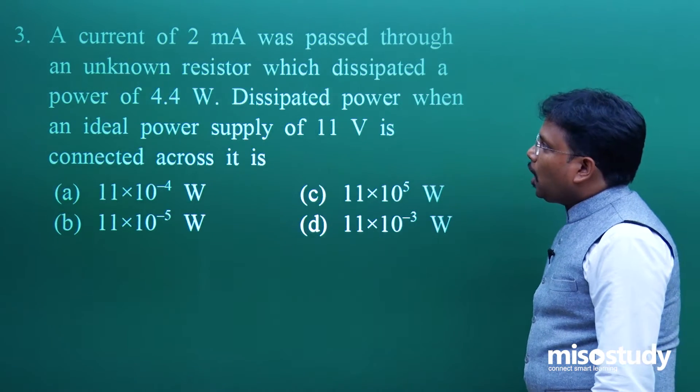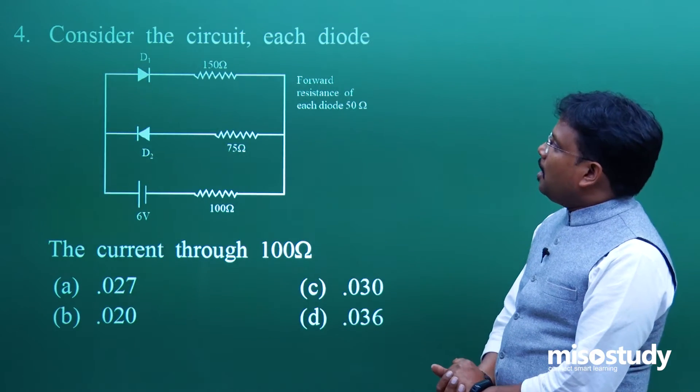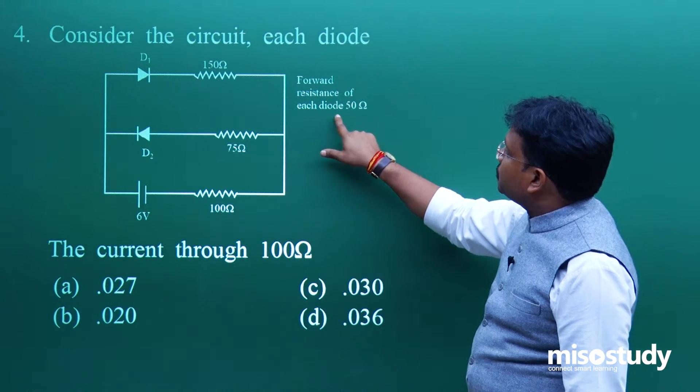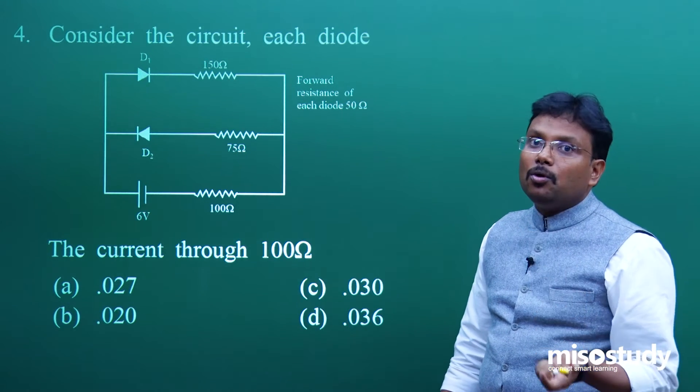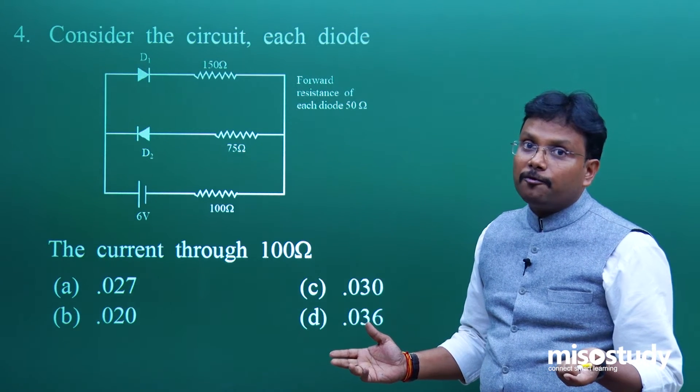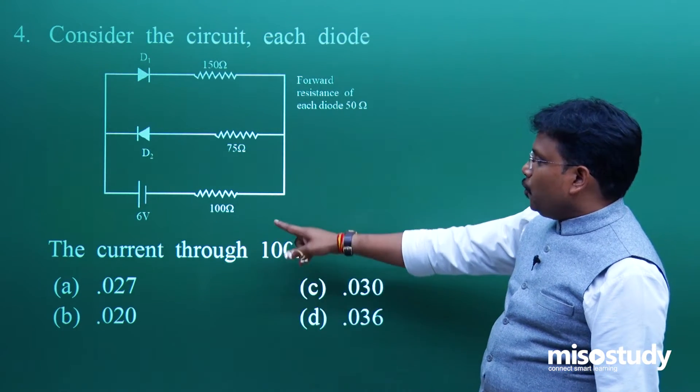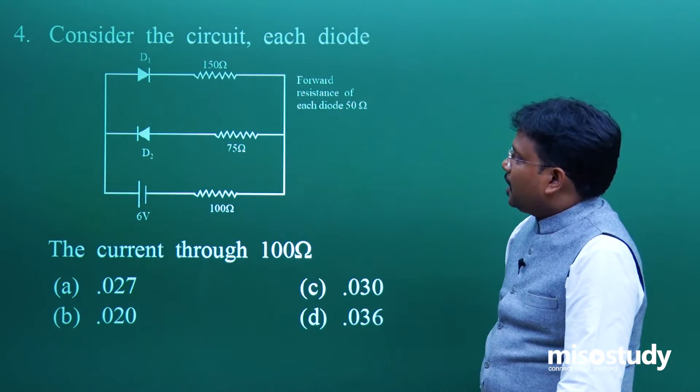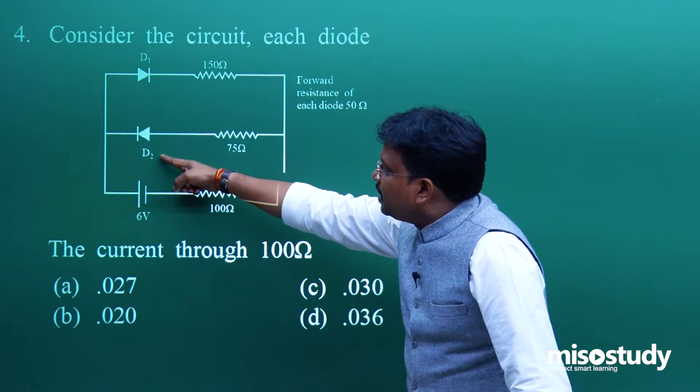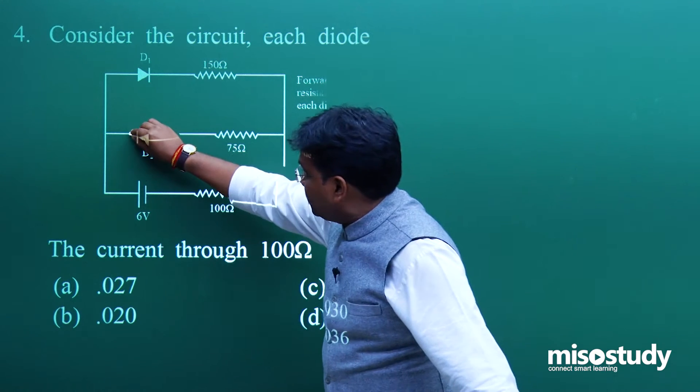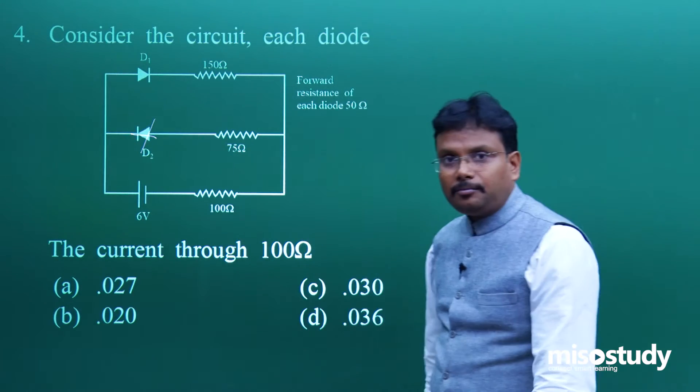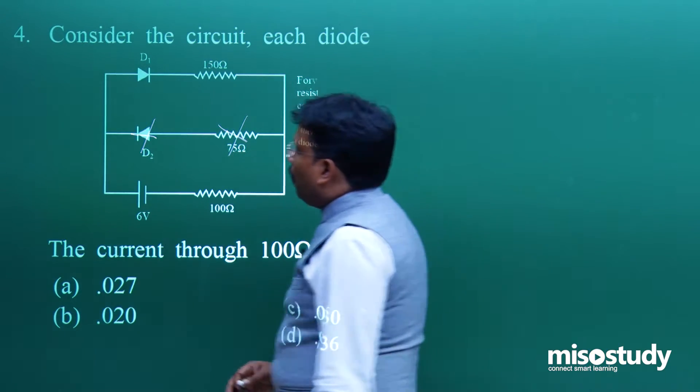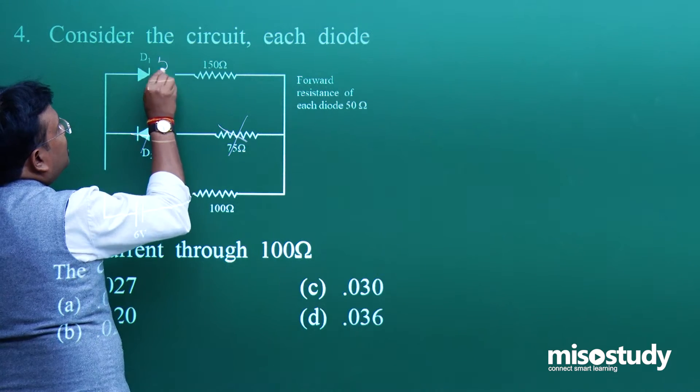Question number 4 from semiconductors. Consider this circuit. Forward resistance of each diode is 50 ohm. You know PN diode never allows flow of current in reverse direction. You have to find the current through this 100 ohm resistor when the battery is 6 volt. Consider one aspect: D2 is in reverse bias, so this is meaningless. Even this entire arm is meaningless. Forget this.